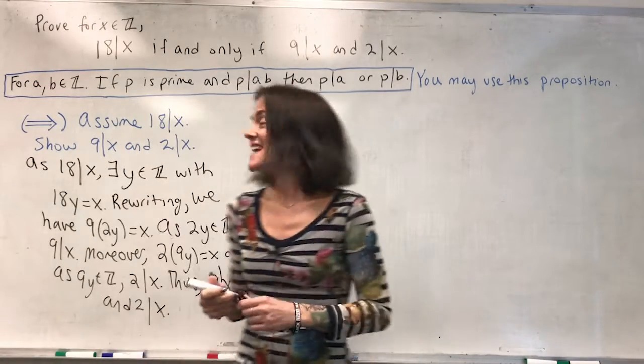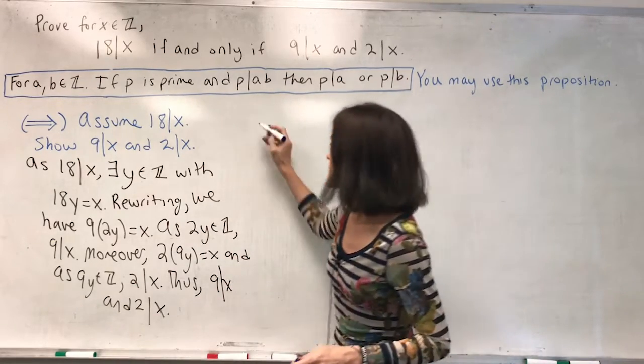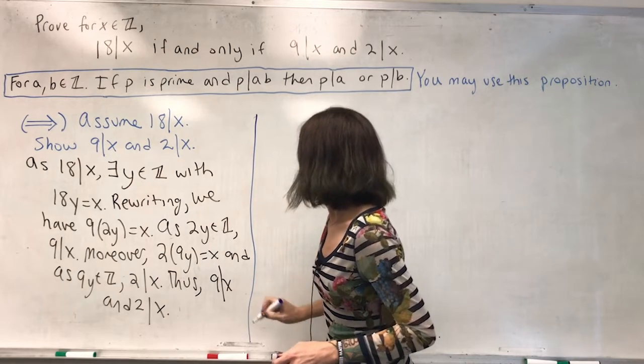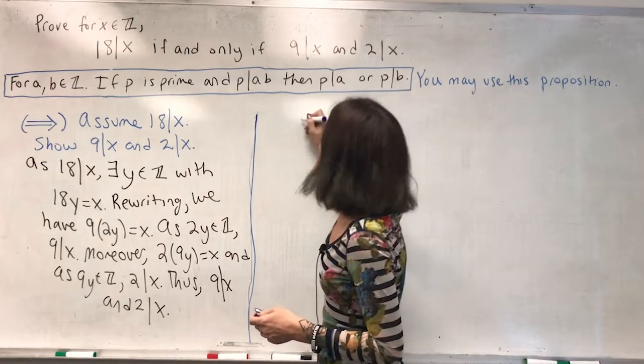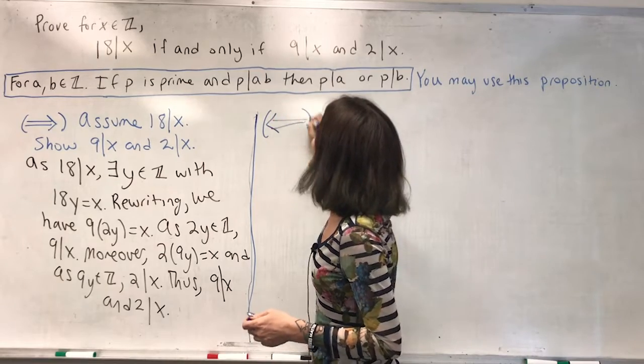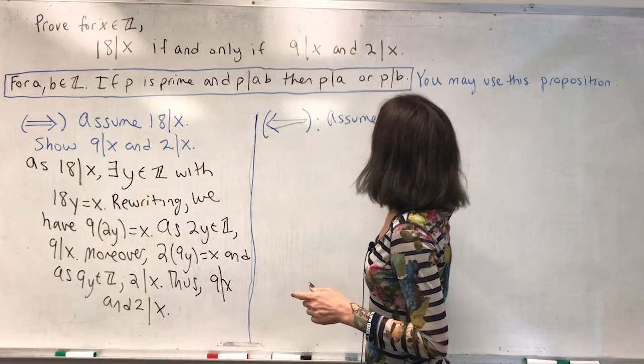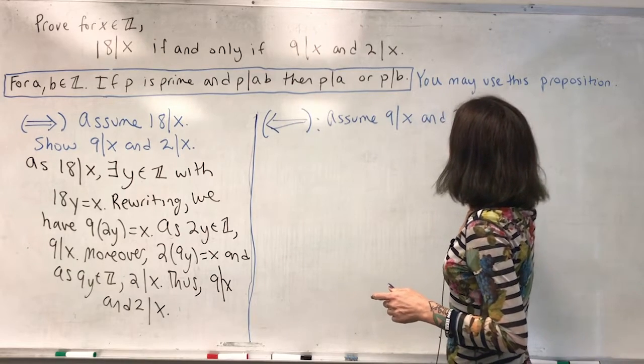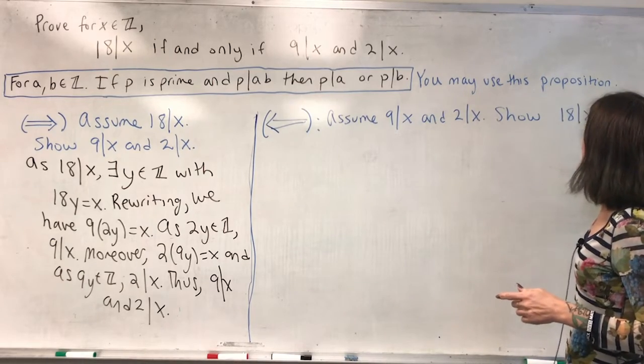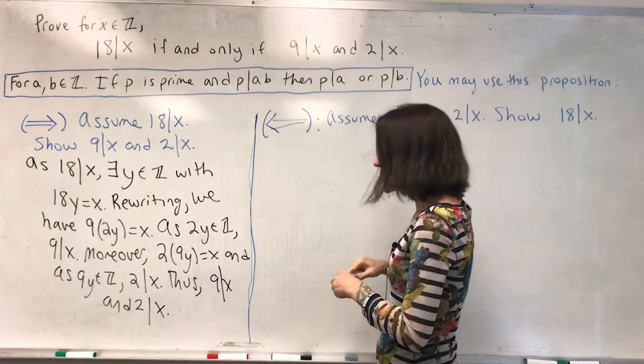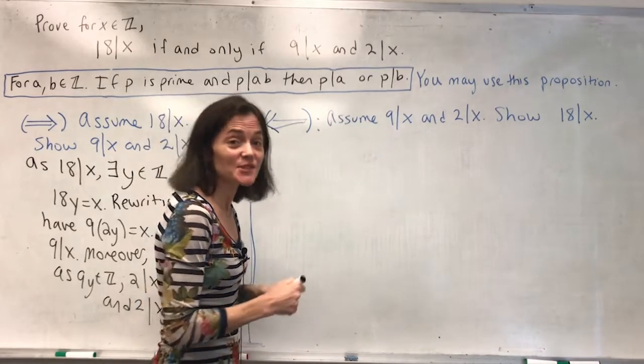This direction was the more straightforward direction. In fact, I have not used this proposition in blue yet, although we will. Let's do this direction, where we assume two things: that 9 divides x and 2 divides x, and we will show 18 divides x. This is going in this direction of the if and only if.